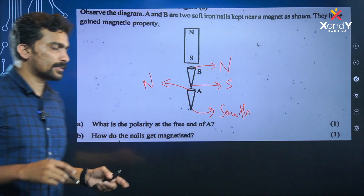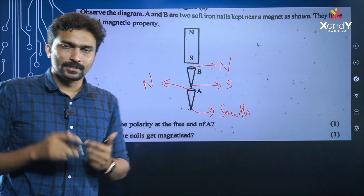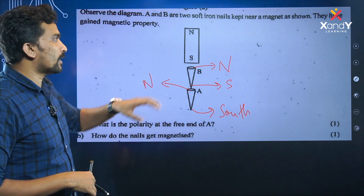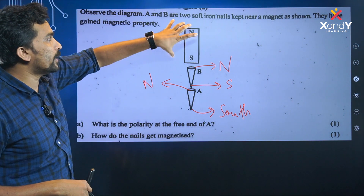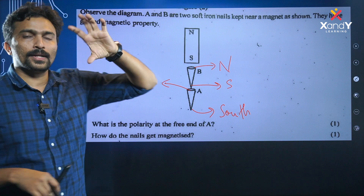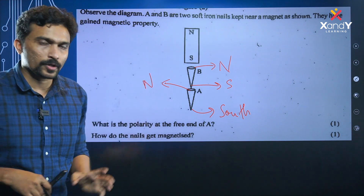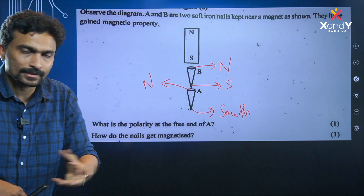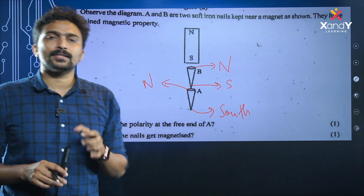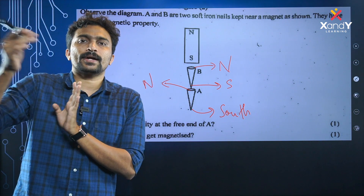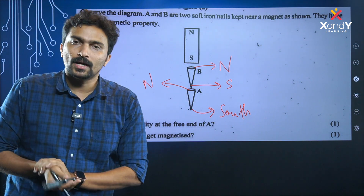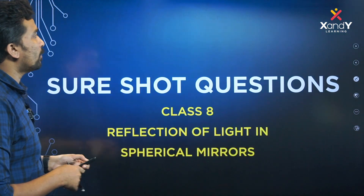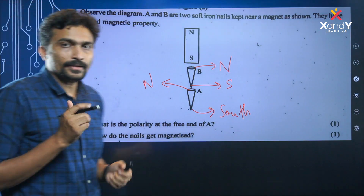How do the nails get magnetized? The nails are magnetized because the bar magnet is already magnetized — it is a permanent magnet. The magnetic field lines cause the nails to become magnetized. That is how the nails get magnetized.